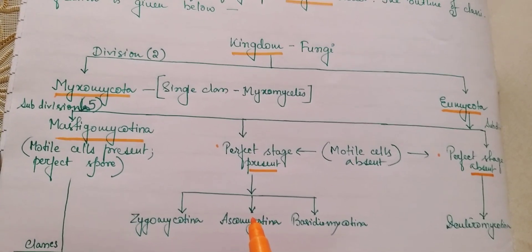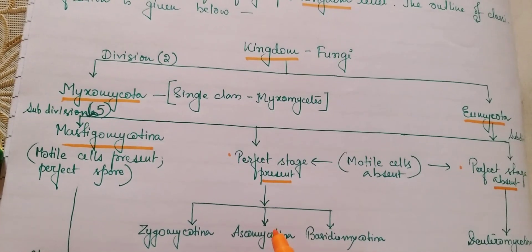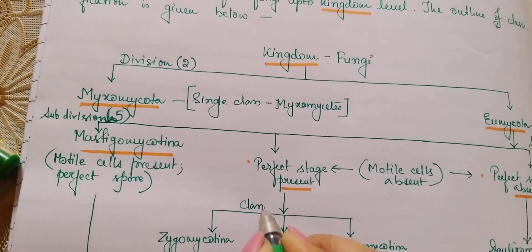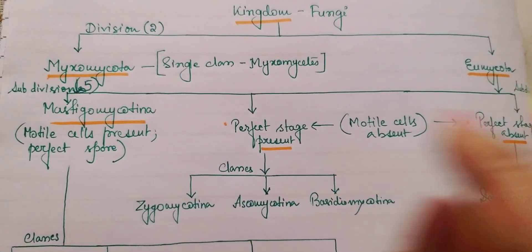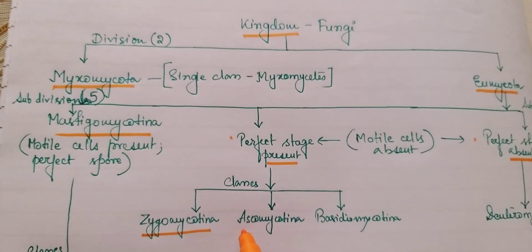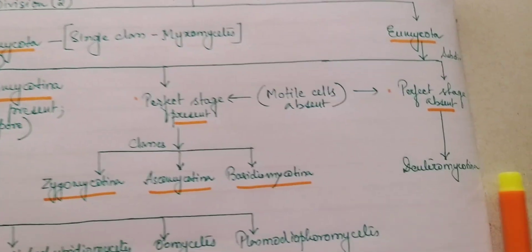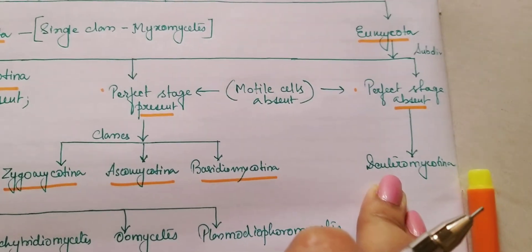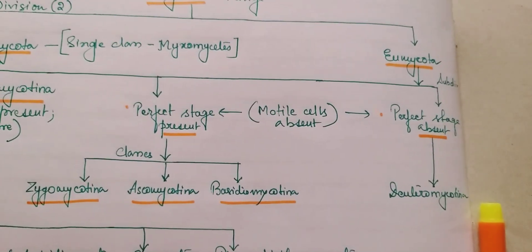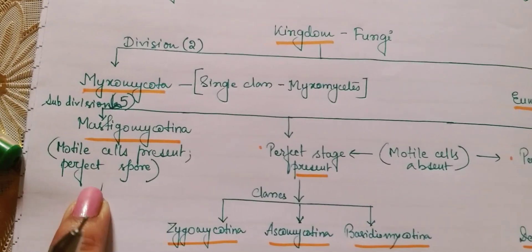The group of fungi where the perfect stage is present can further be divided into three classes: Zygomycotina, Ascomycotina, and Basidiomycotina. The other group where the perfect stage is absent is divided into one class only — that is Deuteromycotina.